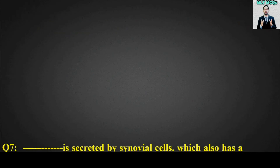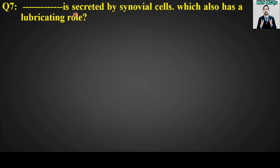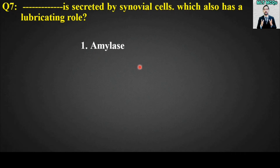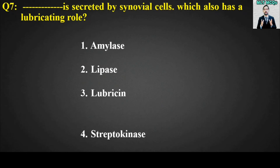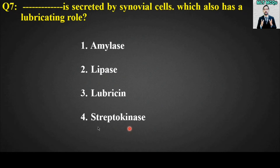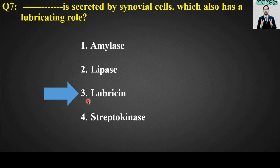MCQ number seven: Blank is secreted by synovial cells which also has a lubricating role. Options are: amylase, lipase, lubricin, or streptokinase. The right answer for this MCQ is option number three — lubricin is secreted by synovial cells which also has a lubricating role.